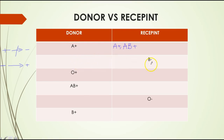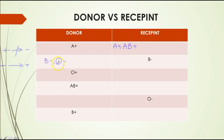For a recipient who is B negative, they can receive from B negative and O negative only. Because this person is negative, they cannot receive anything from a positive donor — their body would react to the Rh antigen. A person with type O doesn't have any antigens, which is why O is the universal donor — their blood won't trigger an immune response in the recipient.